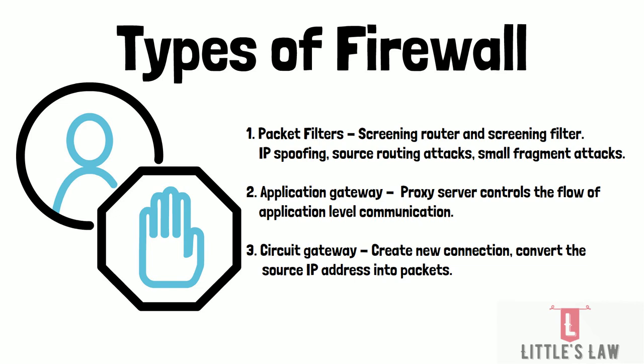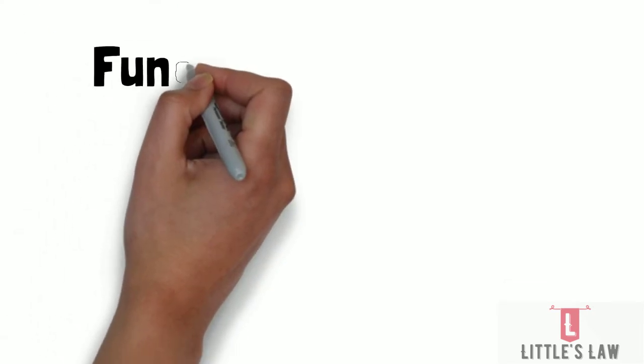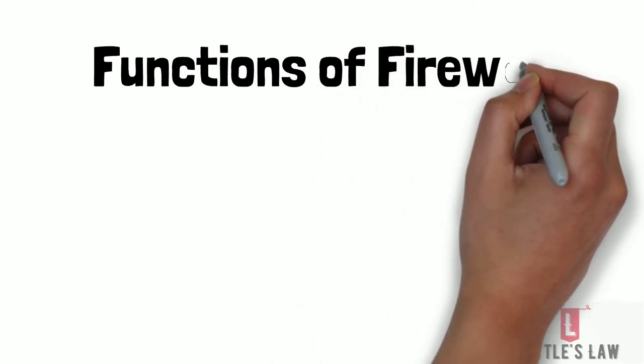The second type is the application gateway, also called a proxy server. This acts as a proxy, controlling the flow of application-level communication while concealing the originating IP address from the public. The third type is the circuit gateway, which is similar to an application gateway but also has the ability to create a new connection between itself and a distant host, and can convert the source IP address into packets from the end user's IP address, thereby hiding the original IP address.